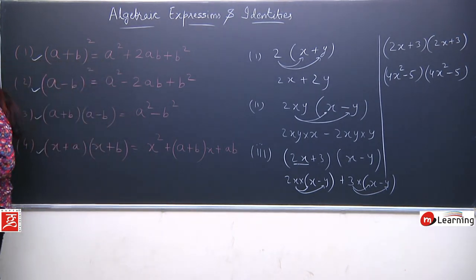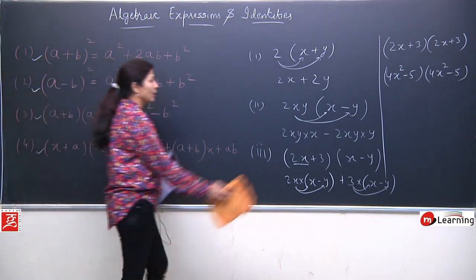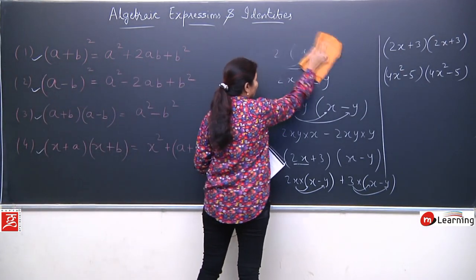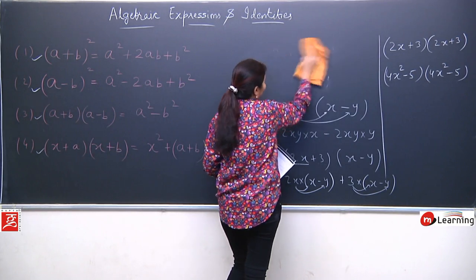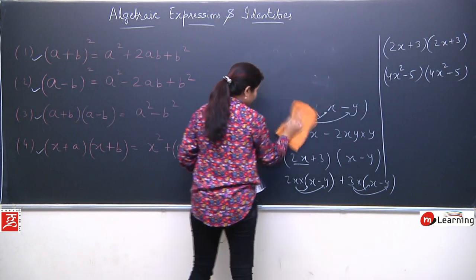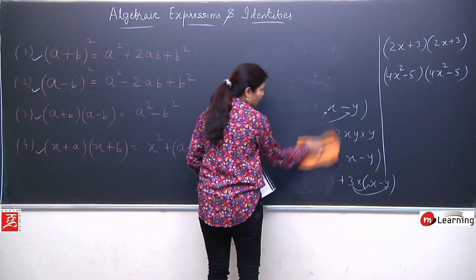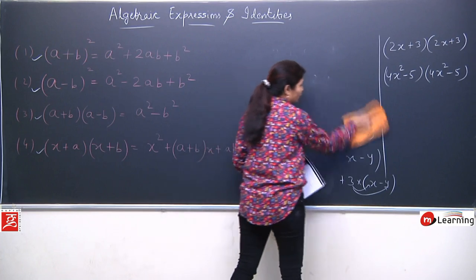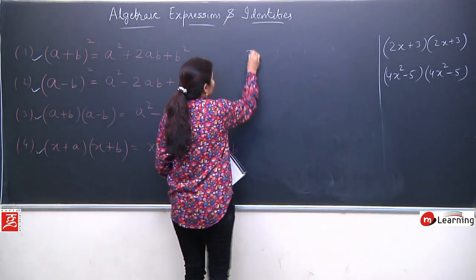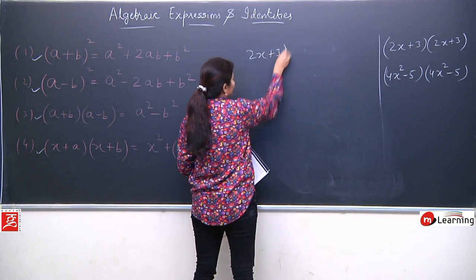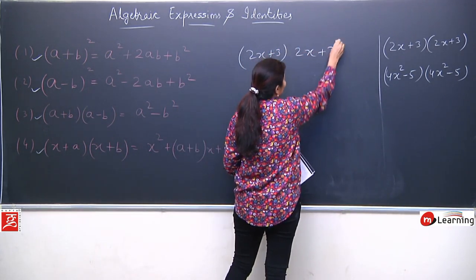Let me first take a simple example so that it becomes clear what the purpose of an identity is, and then we will also learn how the identity came about. First, I have taken (2x + 3) and (2x + 3).